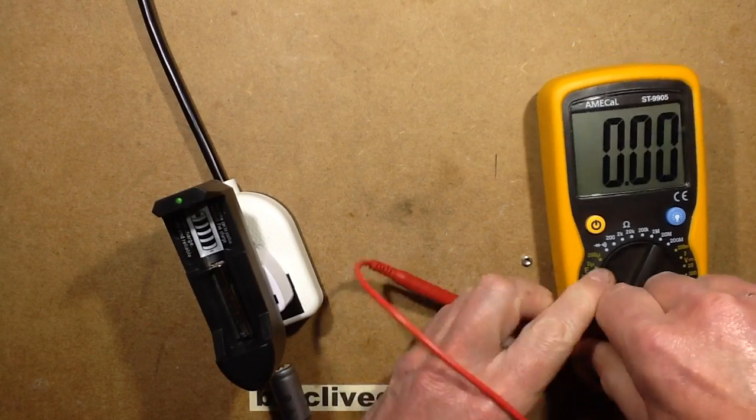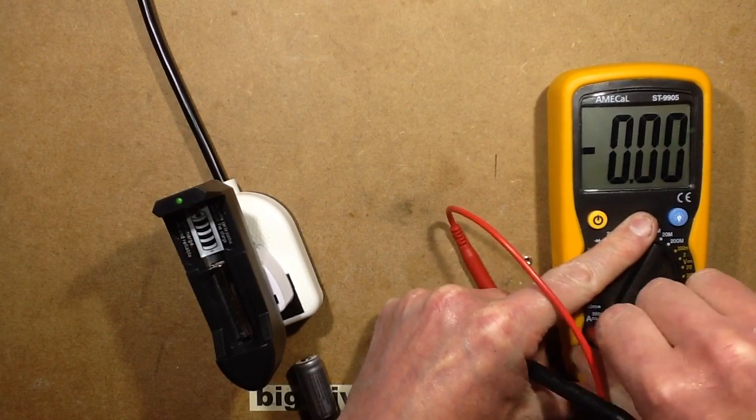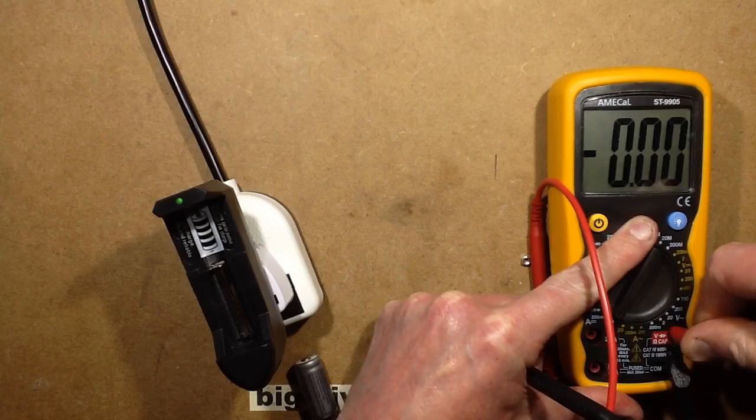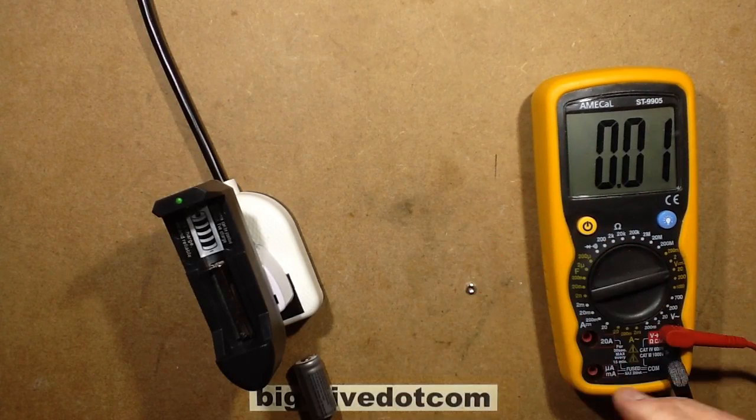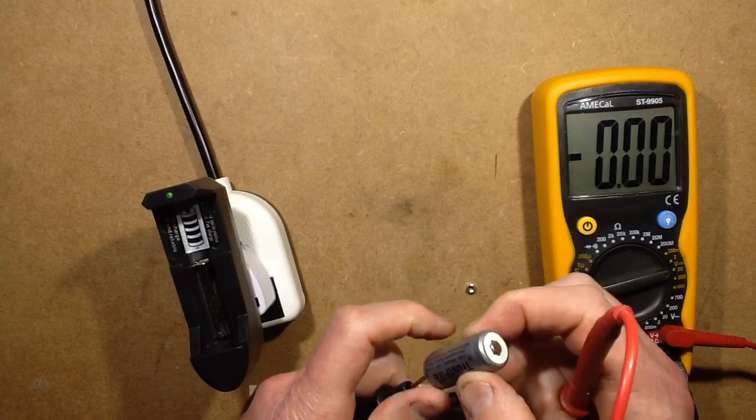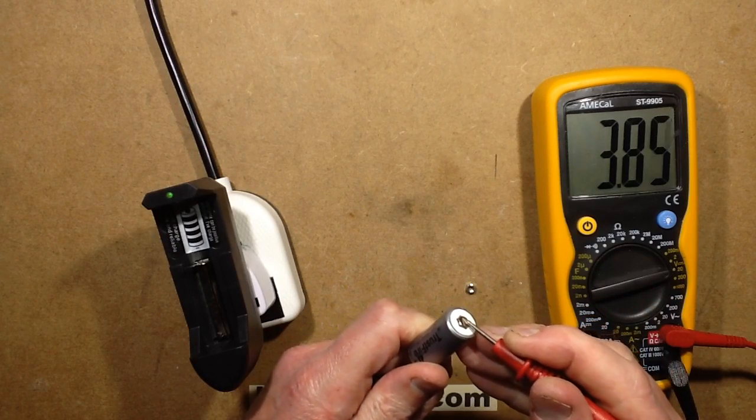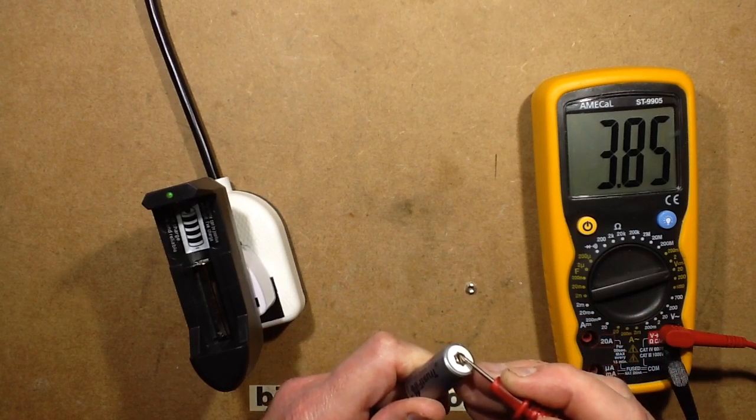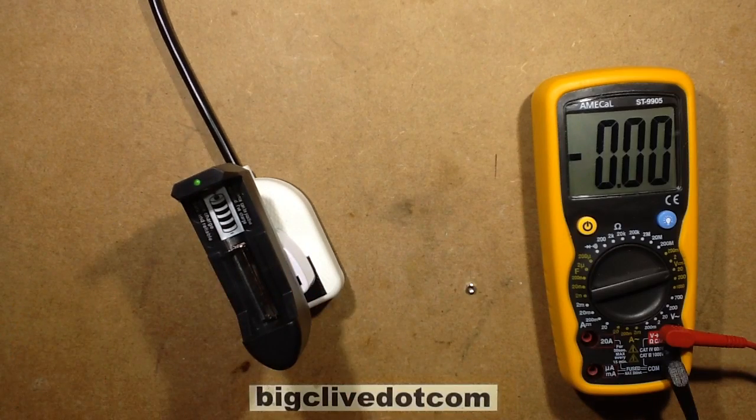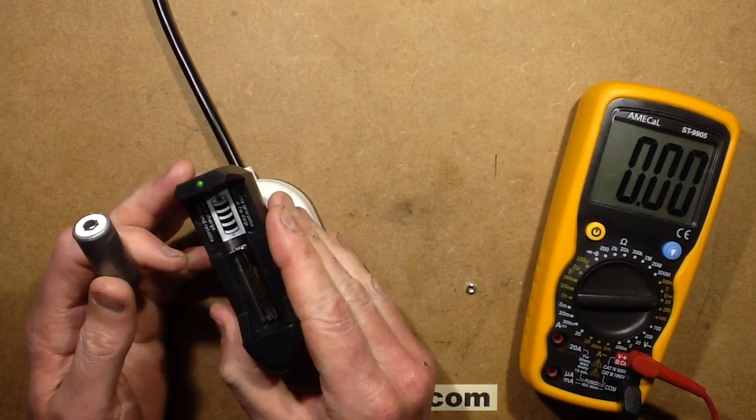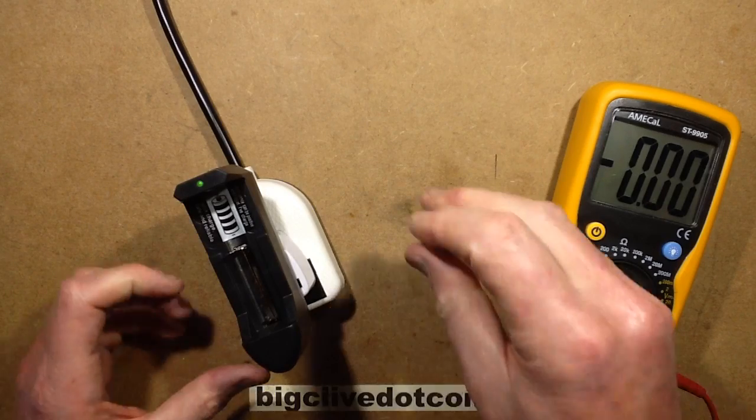Let's see what voltage the cell's at. I'll swap this back from the current range so I don't short out the cell, that would not be so great. The cell's measuring 3.8 volts which isn't super mega high, so that means this is going to take quite a time to charge a cell. It makes me wonder if it's just got a simple resistive limiter.